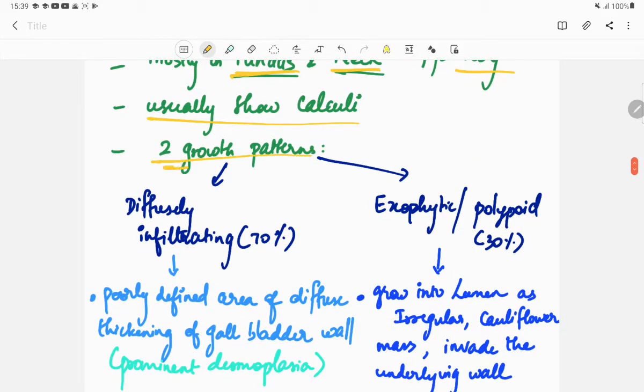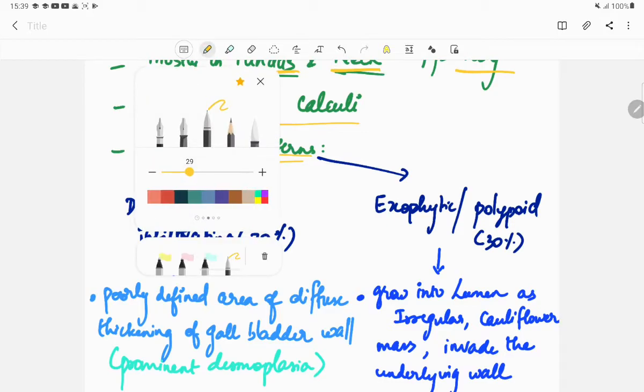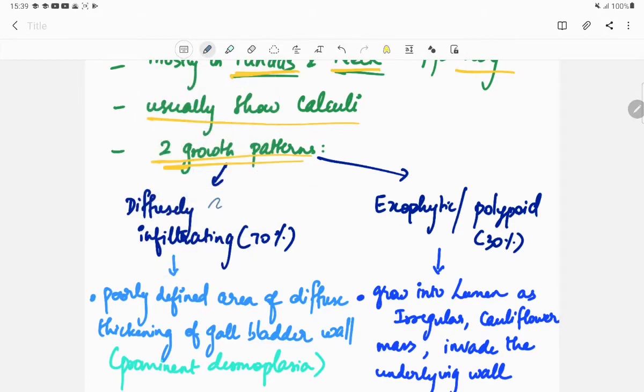There are two growth patterns of gallbladder carcinoma. It can either be diffusely infiltrating, which accounts for 70 percent, or the other pattern is exophytic or polypoid growth pattern, accounting for 30 percent.